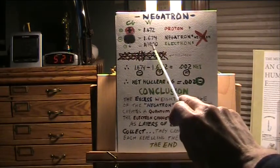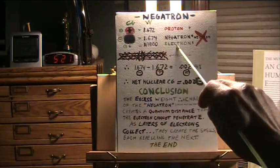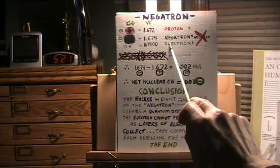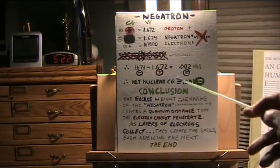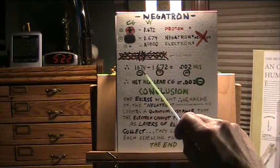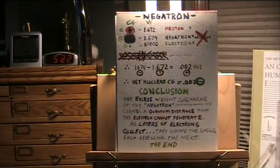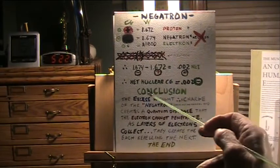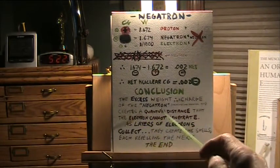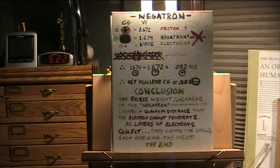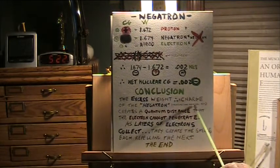The electron is a negative at 1/1800th of the nuclear particles. So 1/1800th is the tiniest particle, which is the electron — smaller than quarks and all that. You have a net negative mass of 0.002: 1.674 minus 1.672 equals 0.002, which is the net negative nuclear mass. The excess weight therefore has an excess charge of negativeness, making it a negatron — it's not a neutron. There are no neutrons rolling around on the floor; it just doesn't make any sense. There are no neutral bits anywhere in there.